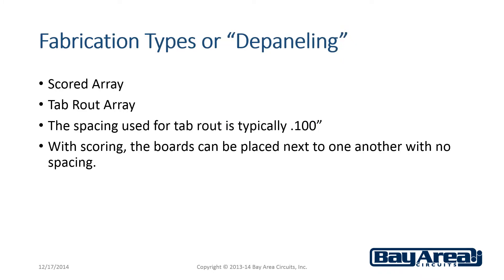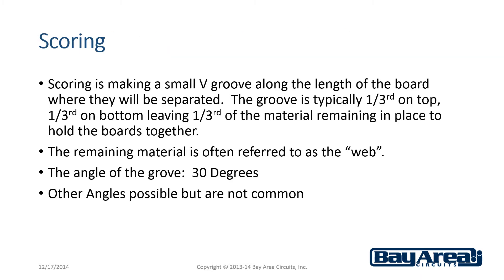The two fabrication types, or depaneling types, are scored and tab routed. The spacing used for tab routed is typically 0.100 inches. With scoring, the boards can be placed next to one another with no additional spacing. Scoring is making a small V-groove along the length of the board where they will be separated. The groove is typically one-third on top, one-third on bottom, leaving one-third of the material remaining in place to hold the boards together. The remaining material is often referred to as the web. The typical angle of the groove is 30 degrees.